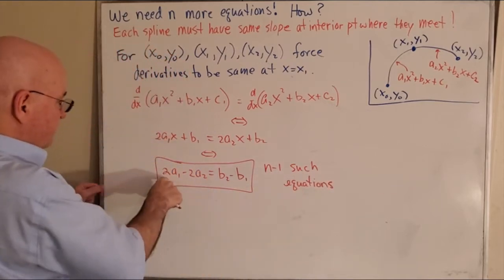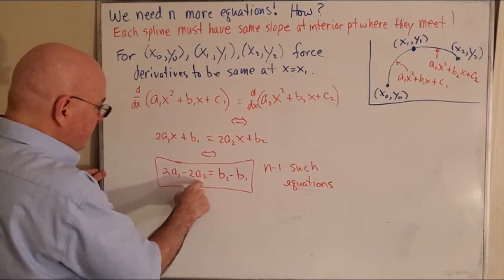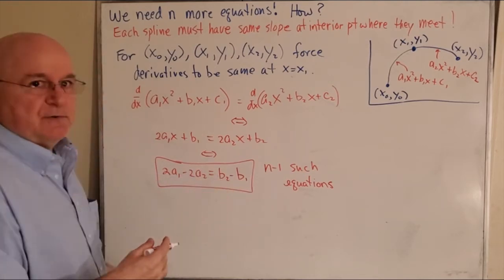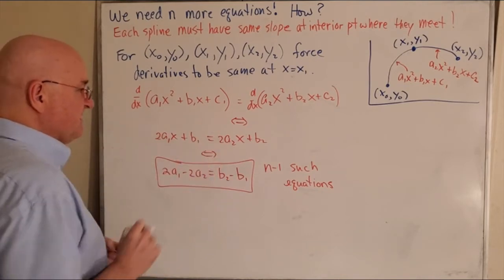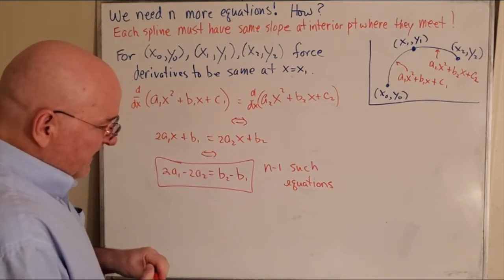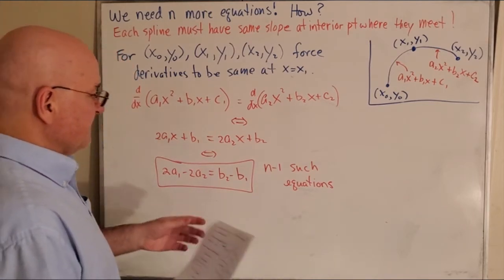You know, because I will also have 2a2 - 2a3 = b3 - b2, and so and so on. So I've got n-1, so we just need one more. And I think for the last one, there's two choices we have, but we're just going to say: